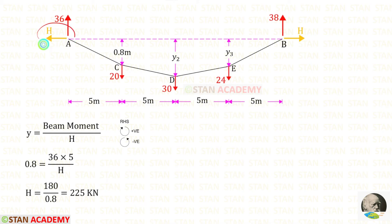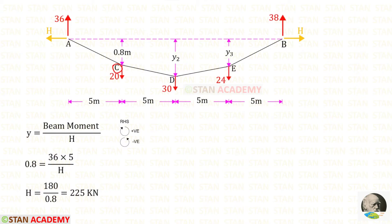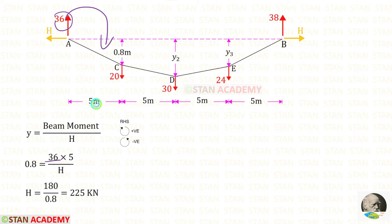Now we are going to find the horizontal thrust H. For that, we can use the formula: Y equals beam moment divided by H. At point C, we know the Y value is 0.8. So if we find the beam moment at that point, we can find the horizontal thrust H. Finding the beam moment from point A up to point C, we have only the vertical reaction 36, which acts in the clockwise direction — positive — and the distance is 5. Taking H on the right side and 0.8 on the left side, we will get the horizontal thrust H equals 225 kN.